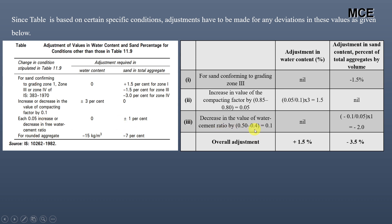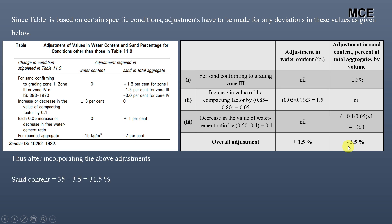For the water-cement ratio, the standard is 0.5 but ours is 0.4, a decrease of 0.1. For each 0.05 decrease, sand adjustment is −1%, so for 0.1 decrease the sand adjustment is −2%. Overall: water content adjustment is +1.5% and sand content adjustment is −3.5%. After adjustments: sand = 35 − 3.5 = 31.5% and water = 186 + (1.5 × 186/100) = 188.8 liters.